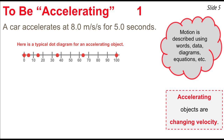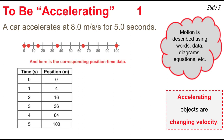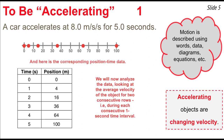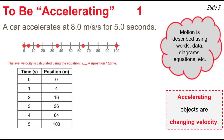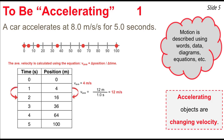In this animation, we see a typical dot diagram for a car accelerating to the right at 8 meters per second per second for 5.0 seconds. We'll analyze the data by looking at each consecutive one-second time interval to see what the velocity is doing. In the first second, position changes by 4 meters, making the average velocity 4 meters per second. In the next second, position changes by 12 meters — from 4 to 16 — making the average velocity 12 meters per second.